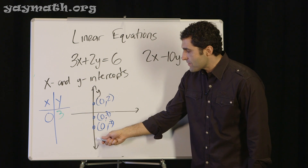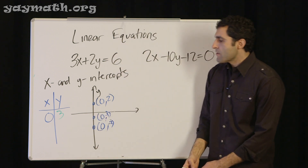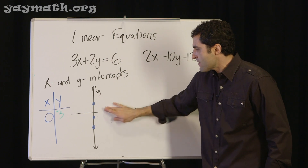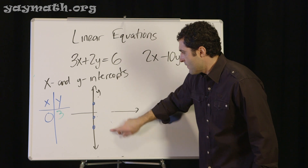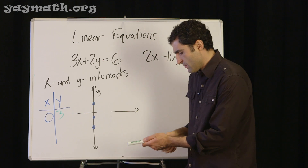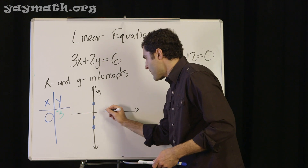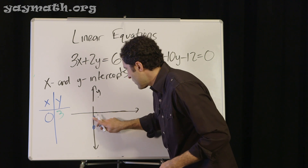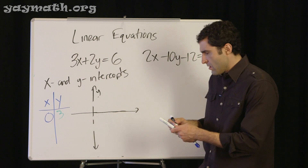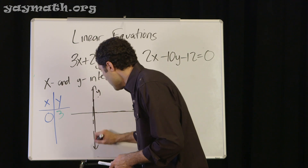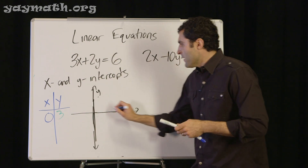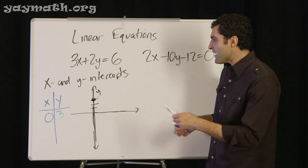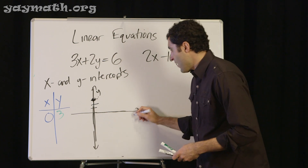On the y-intercept, x must be zero, so that point is (0, 3). Let's get into teacher mode and plot it — go up 1, 2, 3 on the y-axis and place that point.